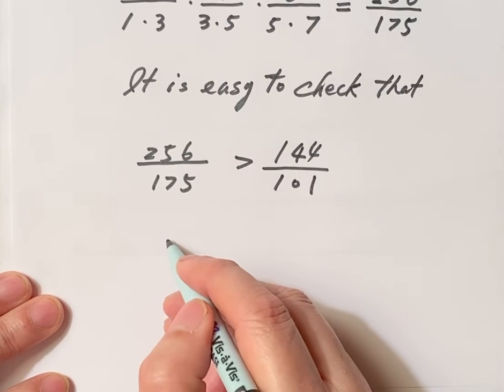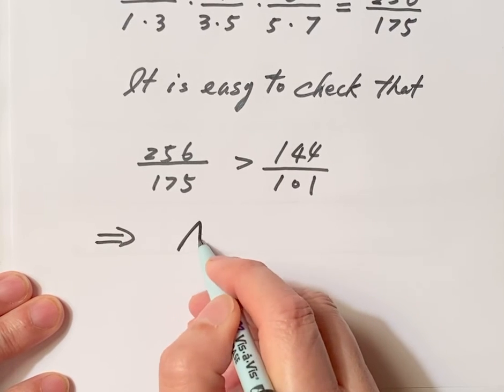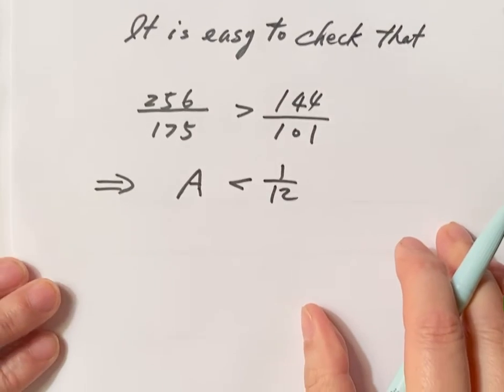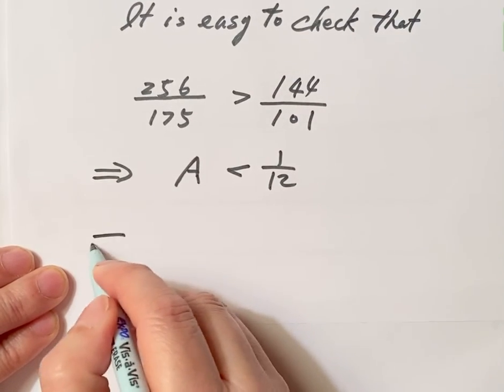Then we have, this implies A less than 1 over 12. What does this mean?